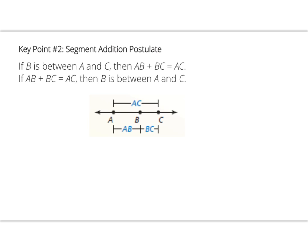Key point number 2 is our segment addition postulate, also known as or abbreviated to SAP. We know that if B is between A and C, then length of AB plus length of BC equals AC. We can switch these two parts of the statement, so if AB plus BC equals AC, then B is between A and C. This is your segment addition postulate.